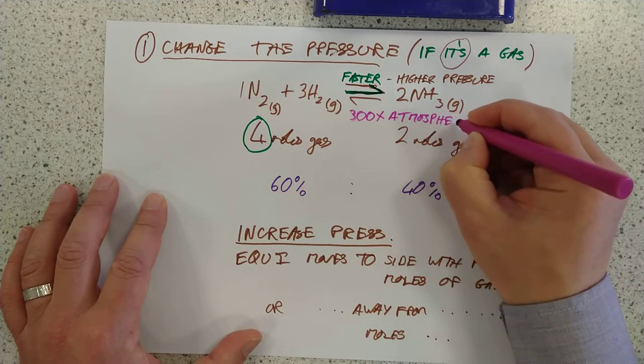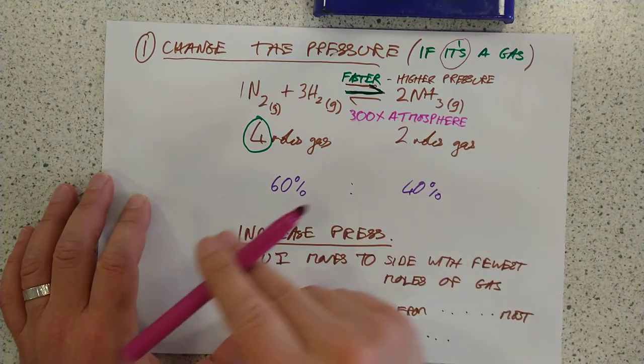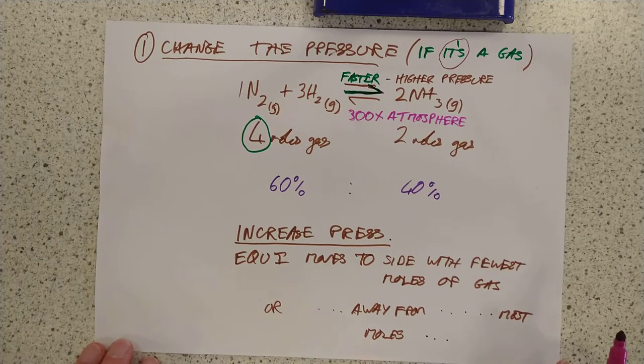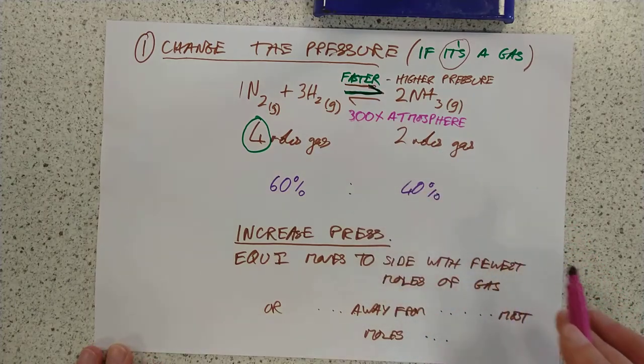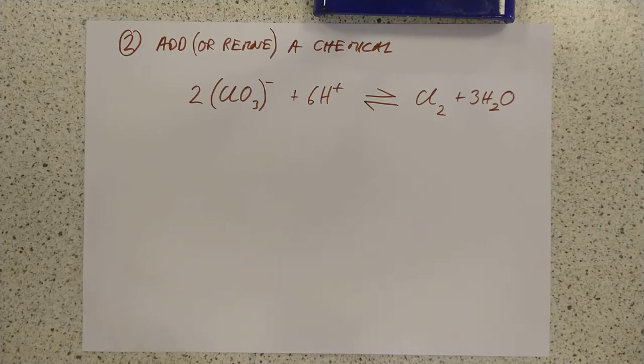Why don't they use 3,000 atmospheric pressures then and shift it really this way? The answer at that point, of course, is because your pipes and your machinery costs more than the ammonia you would make. So, like most things in life, it's a compromise. Method the second.